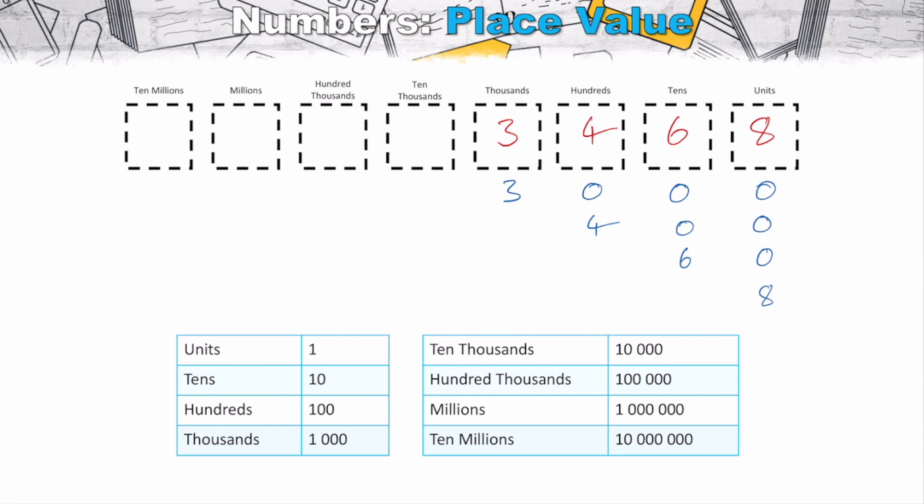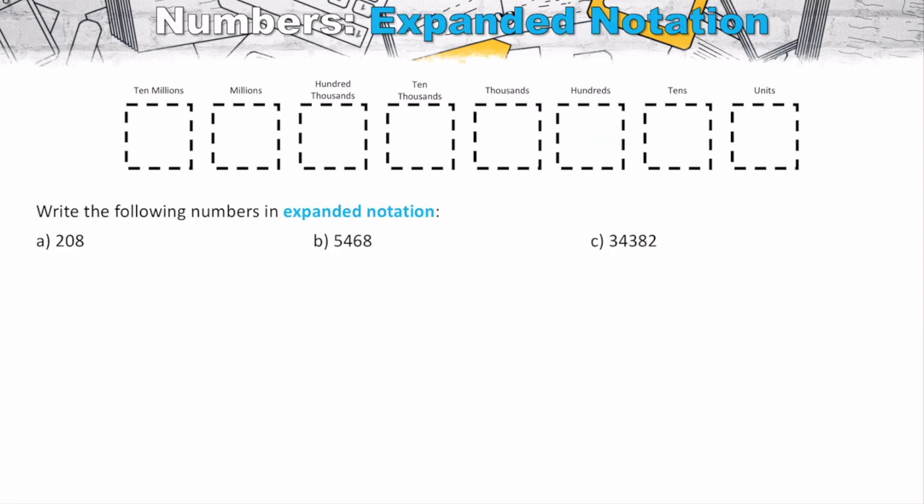So what you'll notice here is if we add each one of these columns up, we'll end up with the original value, that 3,468. And essentially when we're going to break numbers down into expanded notation, we are looking to break it down into the sum of its parts. And let me demonstrate that with some examples here.